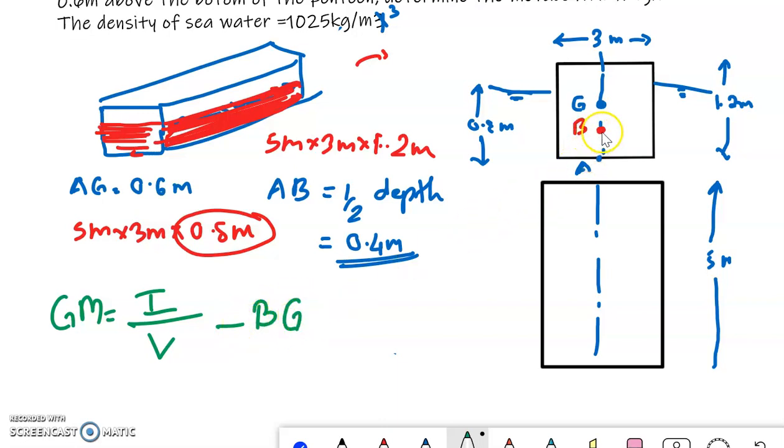Now what is I? I is moment of inertia of the plan. If you find out I, I of a rectangular body is BD cube by 12. And see here, this BD cube is with respect to this plan. So here B will be 5, and D will be about this plan.